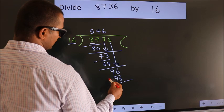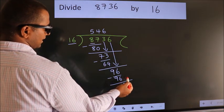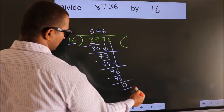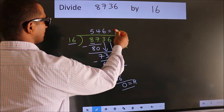Now we subtract. We get 0. No more numbers to bring down, so we stop here. This is our remainder. This is our quotient.